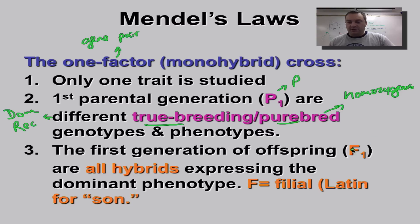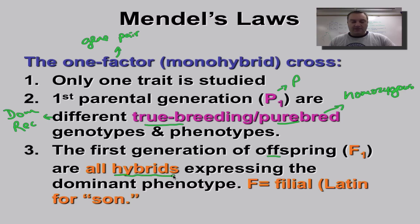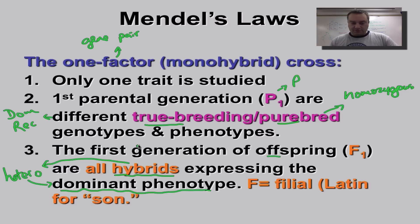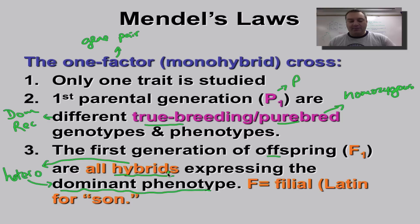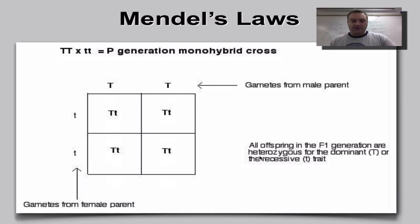One parent is homozygous dominant and the other is homozygous recessive — different genotypes, different phenotypes. The first generation of offspring is called the F1 generation; the F stands for filial, which in Latin means 'son.' All of these offspring are going to be hybrids, and hybrid means heterozygous. When they're heterozygous, they always show the dominant phenotype.